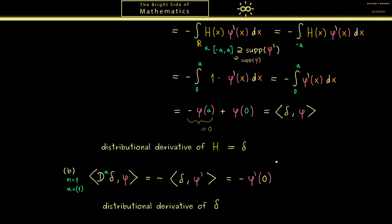We started with a regular distribution but its distributional derivative is not a regular distribution anymore. So the derivative in the distributional sense always exists, but the regularity can change — that is the trade-off with this new definition. Okay, that's good enough for this video. Let's meet in the next one. Have a nice day and see you soon.